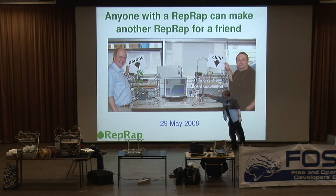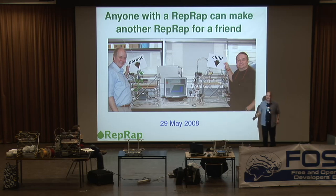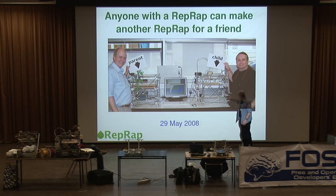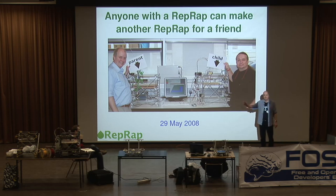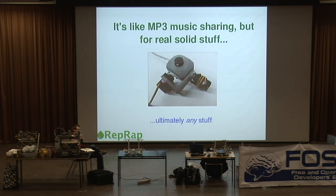The first part that the machine on the right made was actually a part for itself. There's a chain that runs around here driving the vertical movement. When we put the thing together, we discovered we'd made that chain a little bit too long, so it was too slack. We could make it work properly simply by holding a screwdriver against it to give it tension. So we designed a little cable tensioner, had the machine make that while we held the screwdriver onto it, then fitted it — and then the machine worked. So not only can it copy itself, it can also repair itself.